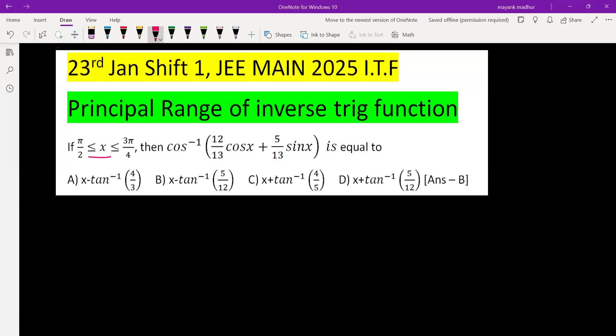If x is varying from π/2 to 3π/4, then we have to find the value of this expression. So we have cos inverse of (12/13 cos x plus 5/13 sin x).